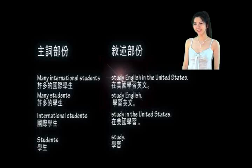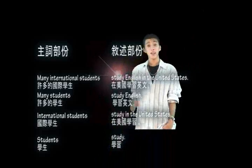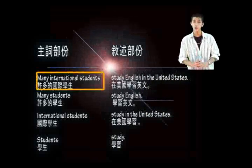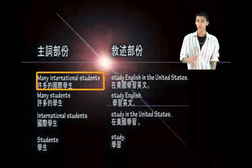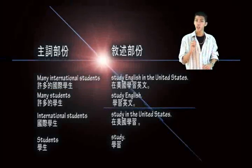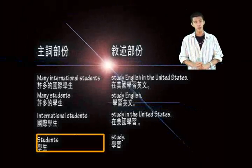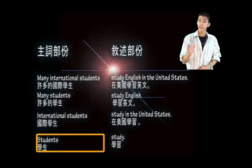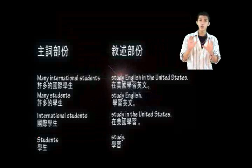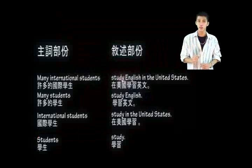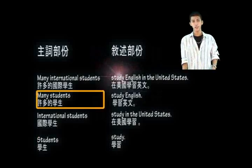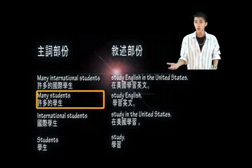都是一個完整的句子。That's right。例如，'many international students' 就是一段完整的主詞。每一段完整的主詞都有一個核心的單字，在這裡就是students。其他單字都是用來補充、說明或修飾students。例如，有多少學生呢？Many students。什麼樣子的學生呢？